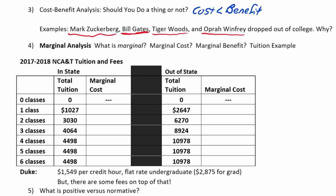That's basic cost-benefit analysis: weigh the costs, weigh the benefits, and make your decision. A lot of times it's more complicated than that — that's when we need marginal analysis, thinking about marginal costs and marginal benefits. Anytime you hear the word 'marginal,' replace it with 'change in' or 'additional.' Marginal analysis helps us figure out not just whether to do something, but how much of something to do.